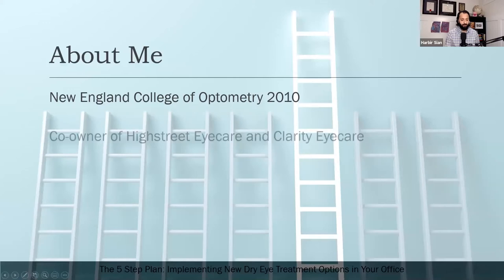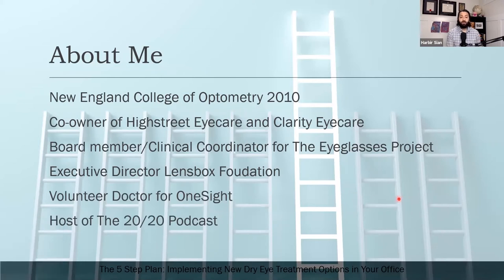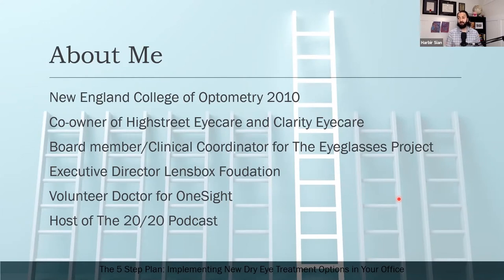My name is Harbir Sayan. I graduated from the New England College of Optometry in 2010 — that's in Boston, a great city if you haven't visited. I'm co-owner of two optometric practices: High Street Eye Care, which is a sub-lease practice next to a LensCrafters, and Clarity Eye Care, an independent optometry clinic where we run the full show — selling glasses, performing dry eye treatments, and everything else ourselves.